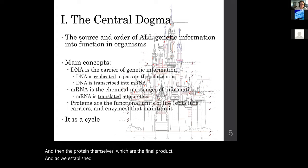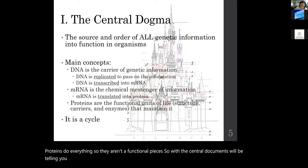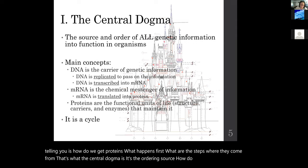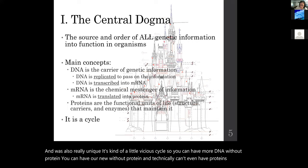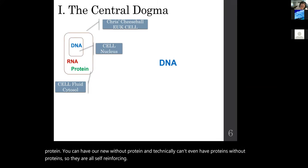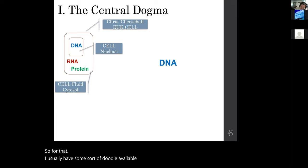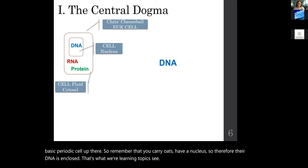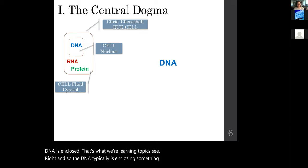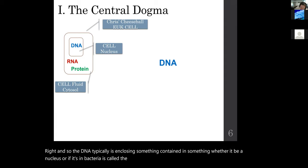Proteins do everything — they are the functional pieces. The central dogma tells you how we get proteins, what happens first, and where they come from. It's also a vicious cycle: you can't have more DNA without protein, you can't have RNA without protein, and you can't even have proteins without proteins. I've drawn a basic eukaryotic cell — eukaryotes have a nucleus, so their DNA is enclosed, whether in a nucleus or, in bacteria, a nucleoid region.